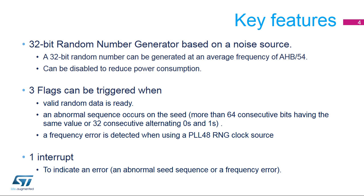The RNG verifies the randomness of the provided data. If more than 64 consecutive bits have the same value, 0 or 1, or there are more than 32 consecutive alternating 0s and 1s, a seed error current status flag is set.